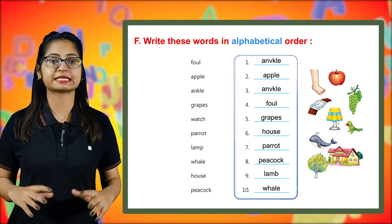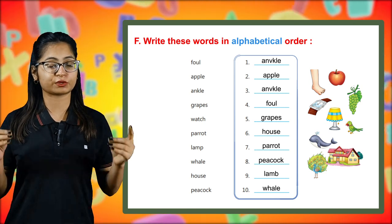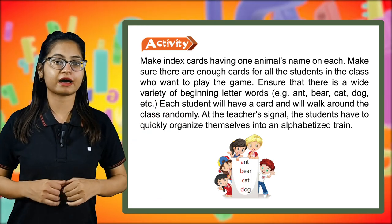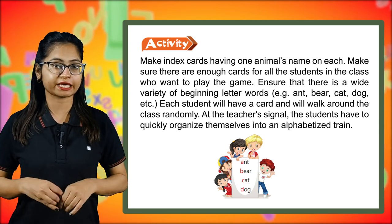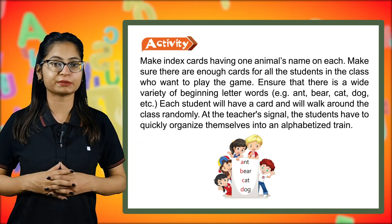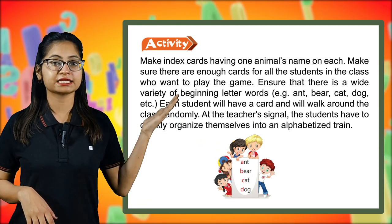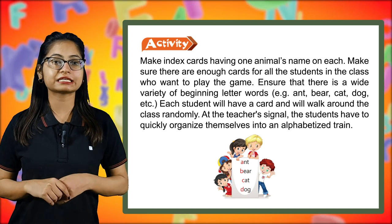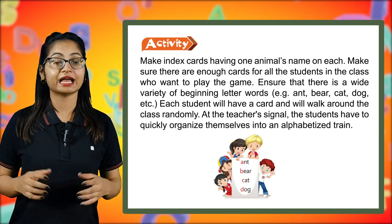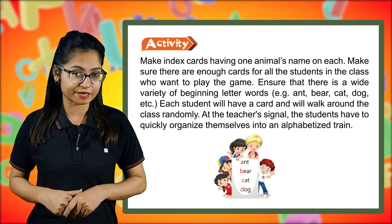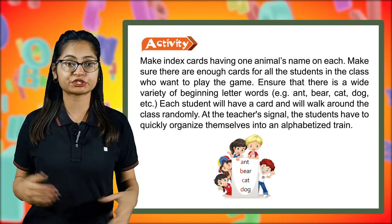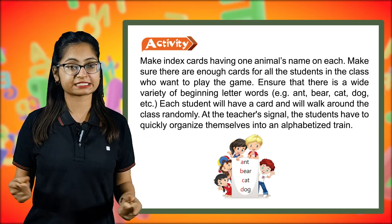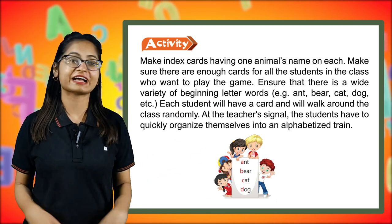Concluding the chapter, we have an interesting activity. Make index cards with one animal's name on each card. Make sure there are enough cards for all students and ensure a wide variety of beginning letters — for example: ant, bear, cat, dogs, etc. Each student will have a card and walk around the class randomly. At the teacher's signal, students have to quickly organize themselves into an alphabetized train.